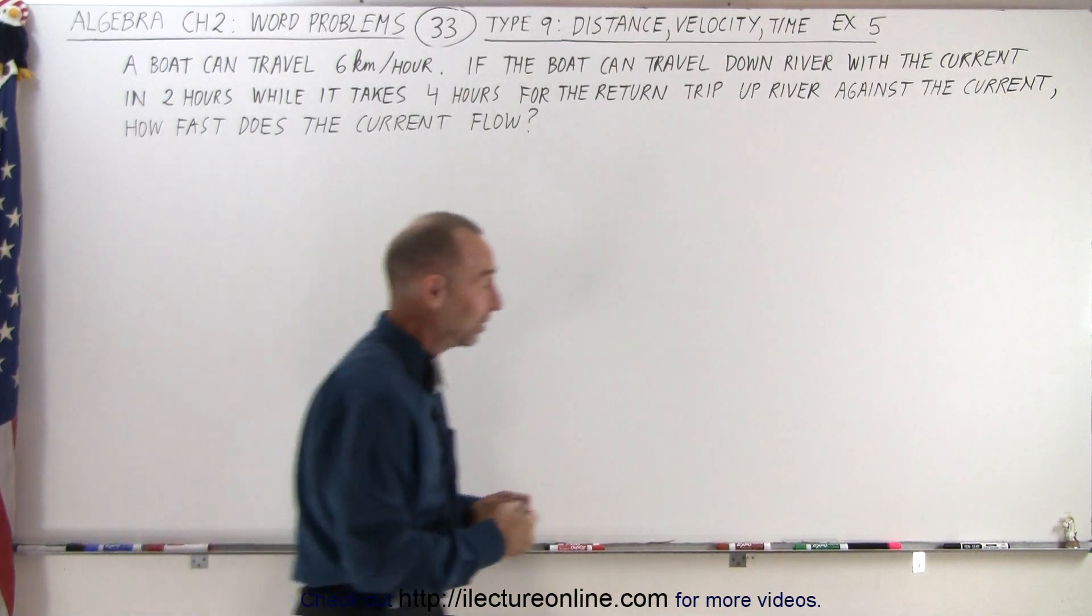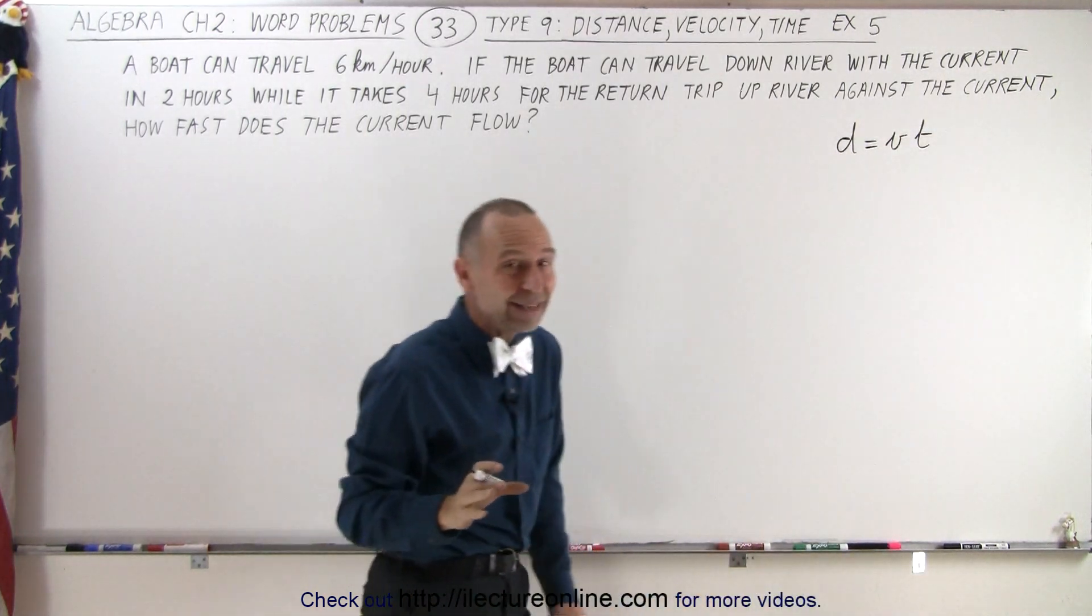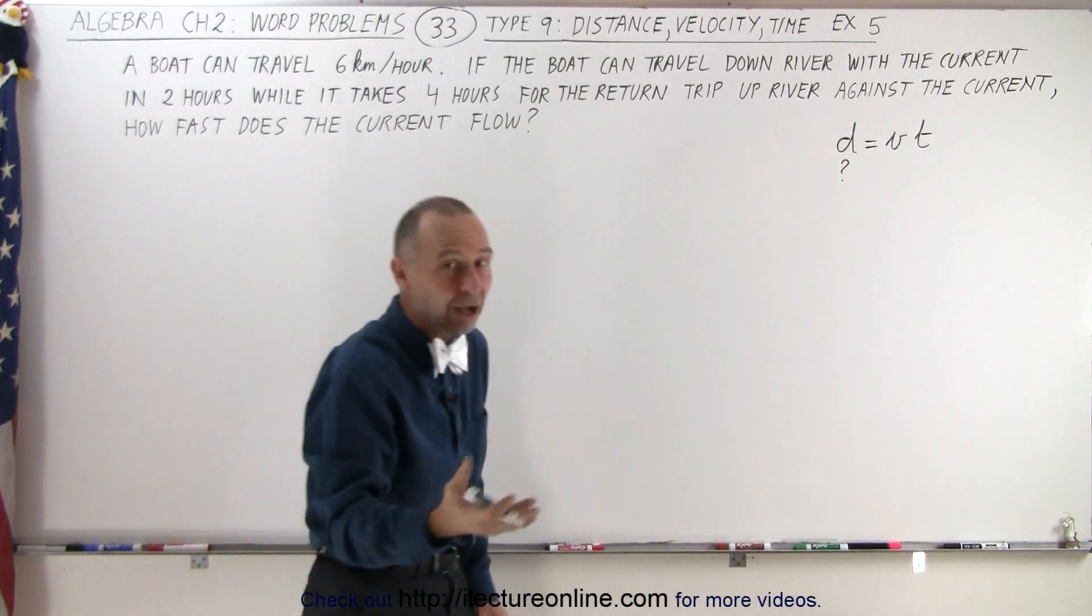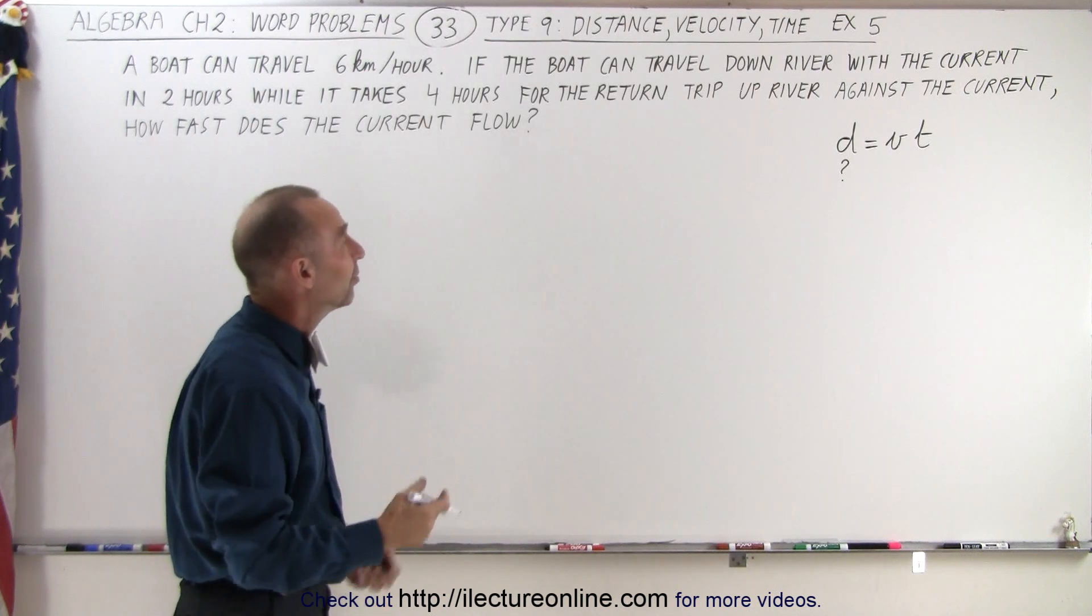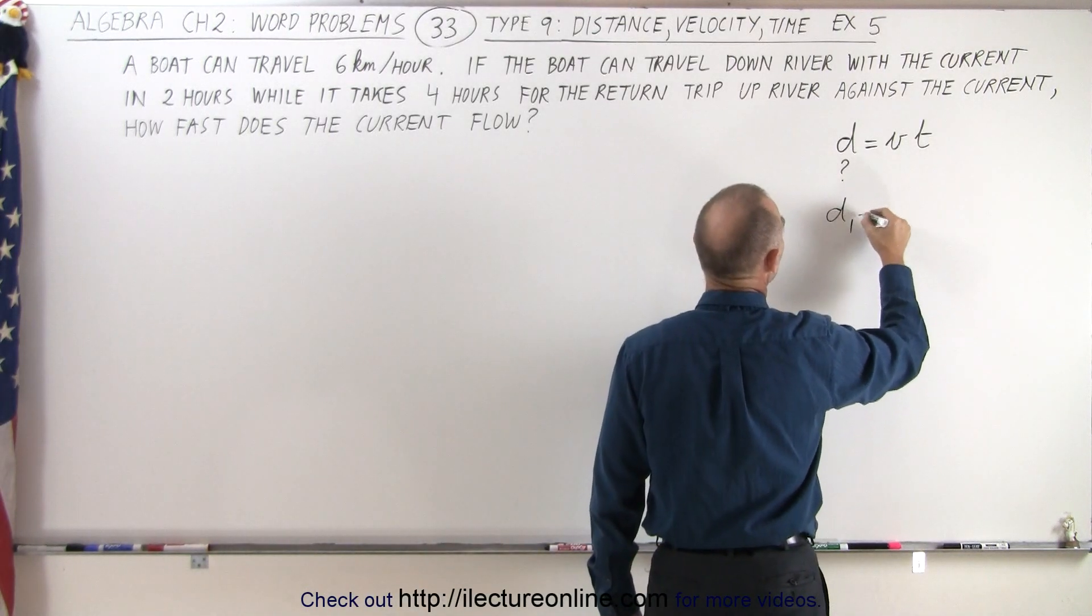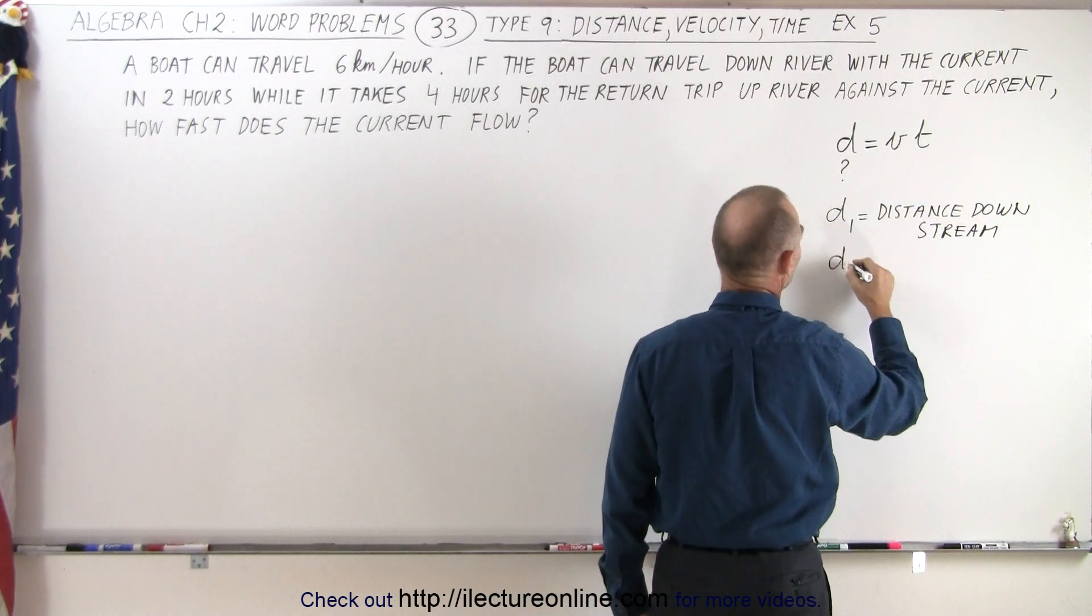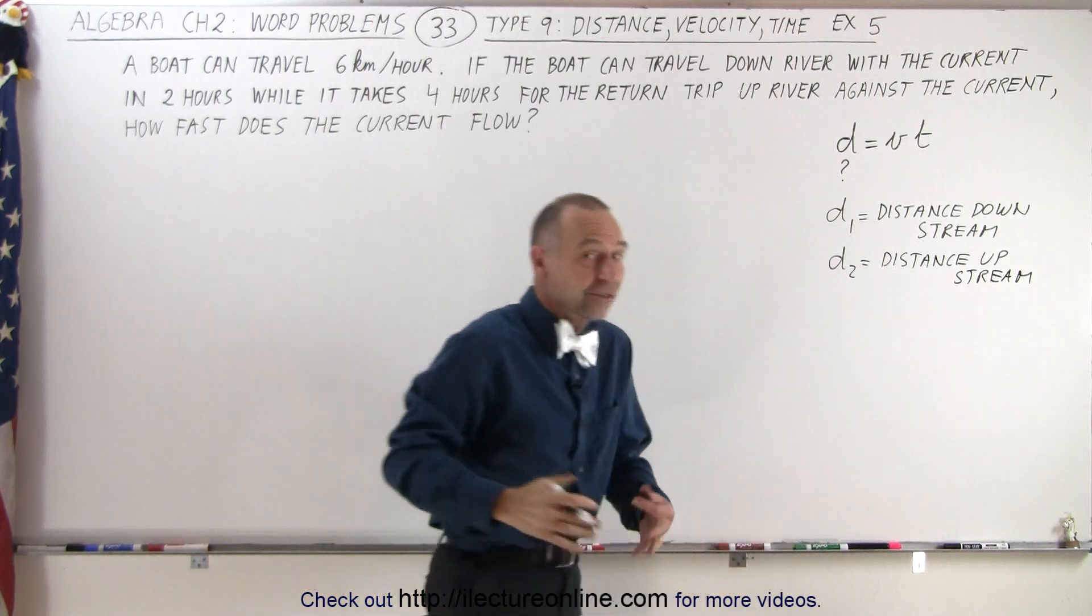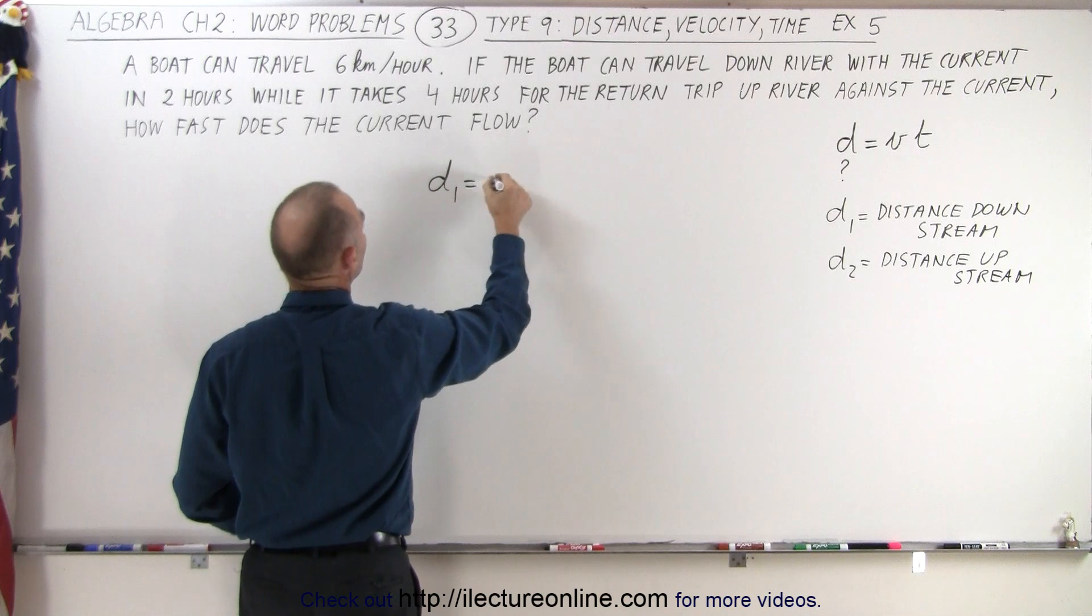We're going to start with the same equation: distance equals velocity times time. But notice in this case, we don't know the distance. We do not know how far the boat travels downstream and how far the boat travels upstream. So that means we want to get rid of the distance. Let's say that we call distance downstream distance 1, and we call distance 2 equal to the distance upstream. Then since they are the same, we can simply equate them to one another. So we can write that distance 1 equals distance 2.